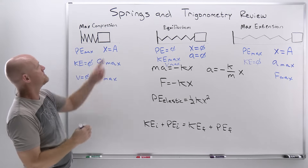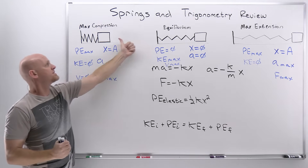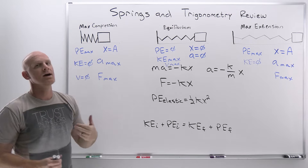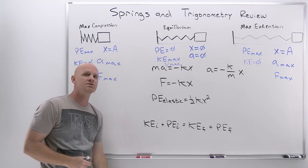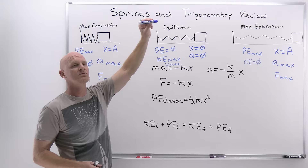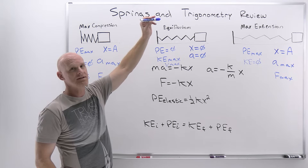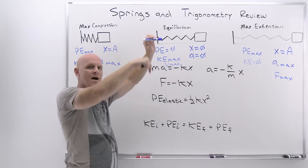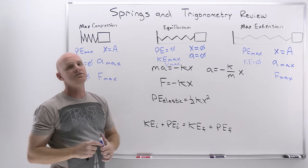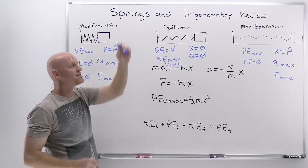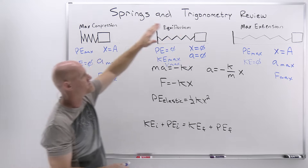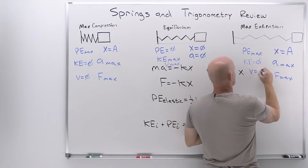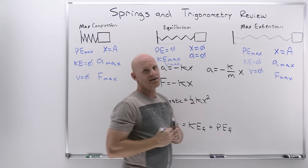At the extremes, velocity equals zero as kinetic energy is zero. That's where the mass is compressing, then stops for a moment and switches directions. Just like when we throw something upward — at its maximum height, it momentarily freezes before traveling downward. The same thing happens at maximum compression or maximum extension: instantaneously, the velocity is zero there as well.